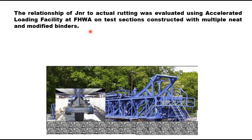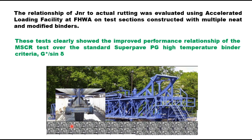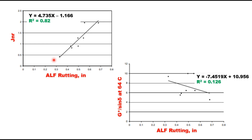The sections were heated to 54°C and trafficked with a super single tire loaded to 10,000 pounds. Rutting of the test sections was compared to both G* / sinδ and the MSCR high temperature parameter JNR. The test sections clearly showed the improved performance relationship of the MSCR test over the standard Superpave PG high temperature binder criteria. When ALF rutting was plotted against JNR versus against G* / sinδ at 64°C, the correlation between rutting and JNR was much better.